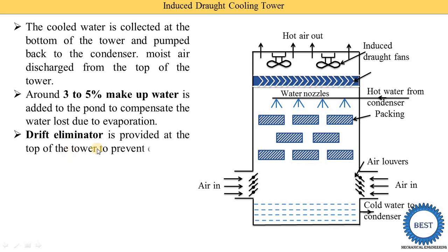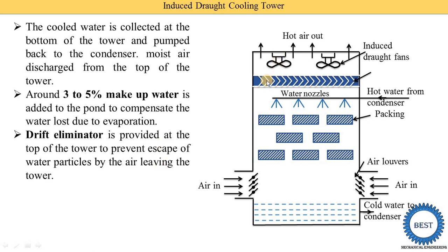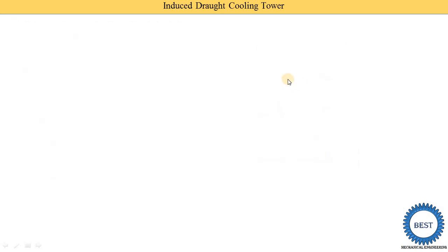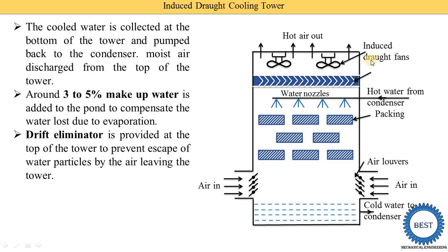A drip eliminator is provided at the top of the tower to prevent the escape of water particles by the air leaving the tower. Here you can see this is the drip eliminator. The function of the drip eliminator is to absorb the water particles from the air.